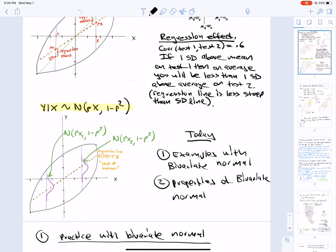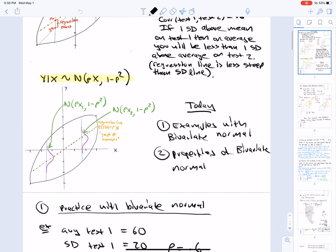Another important thing to note is that the distribution for Y given X is normal Rho X 1 minus Rho squared. So notice that the center of that normal distribution is a point on the regression line and the variance is the same for all X. Today, we're going to look at examples with the bivariate normal and start looking at properties of the bivariate normal.